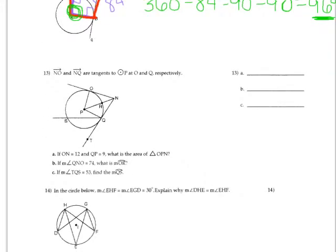Number 13 is actually very similar to number 10. This question is asking you, if ON is 12 and QP is 9, what is the area of triangle OPN? Remember that if PQ is 9, then OP is also 9, because they're both radii. And this is a right angle, because that's a tangent line. So I can do the area by using the 9 and the 12.